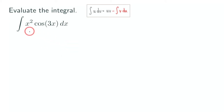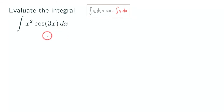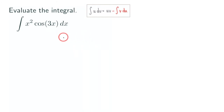Hello everyone, let's look at this integral here. We have x squared times cosine 3x, and this is another integration by parts integral.